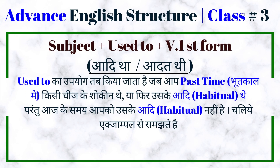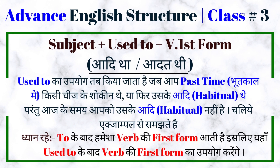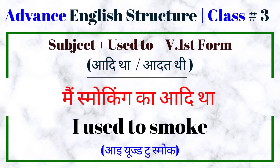Subject plus 'used to' plus verb ki first form. Used to ka upyog tab kiya jata hai jab aap past time, yani ki bhootkal mein, kisi cheeze ke shokin thhe ya phir uske aadhi — matlab habitual thhe — parantu aaj ke samay aap uske aadhi ya phir habitual nahi hain. Dhyan rahe: 'used to' ke baad verb ki first form aati hai. Main smoking ka aadhi tha — I used to smoke.